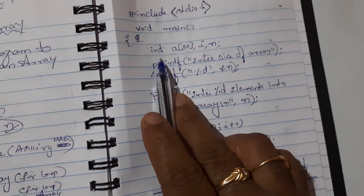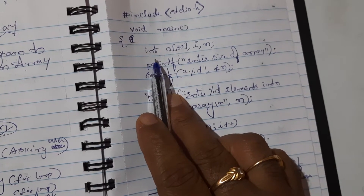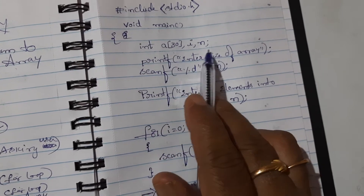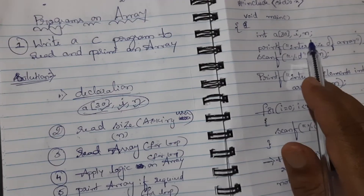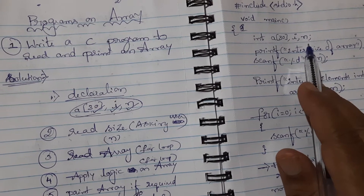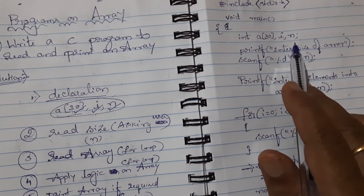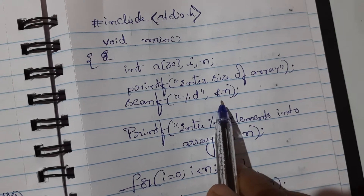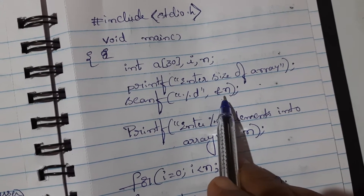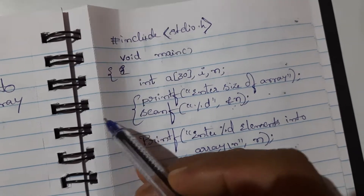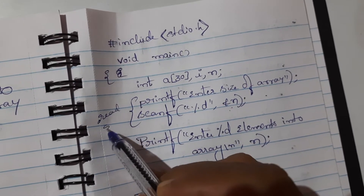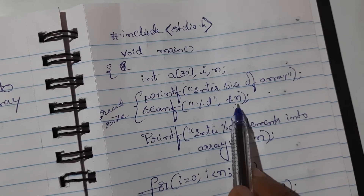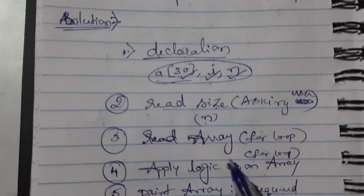Now let us write the program. We declare an integer array to store integer numbers: int a[30], i, n. Then read the size — we ask the user 'enter the size of array'. The number entered by the user is stored in variable 'n'. Remember: reading the size means one printf and one scanf.